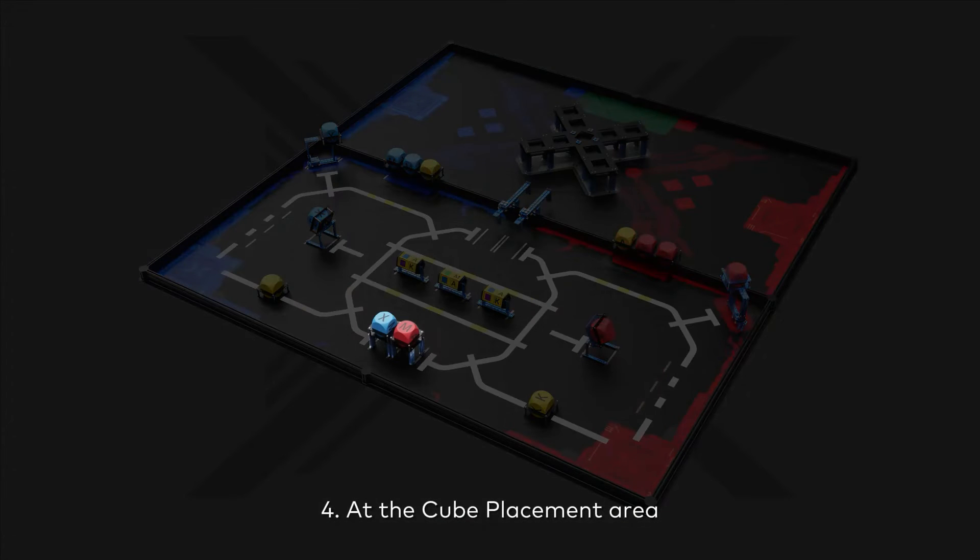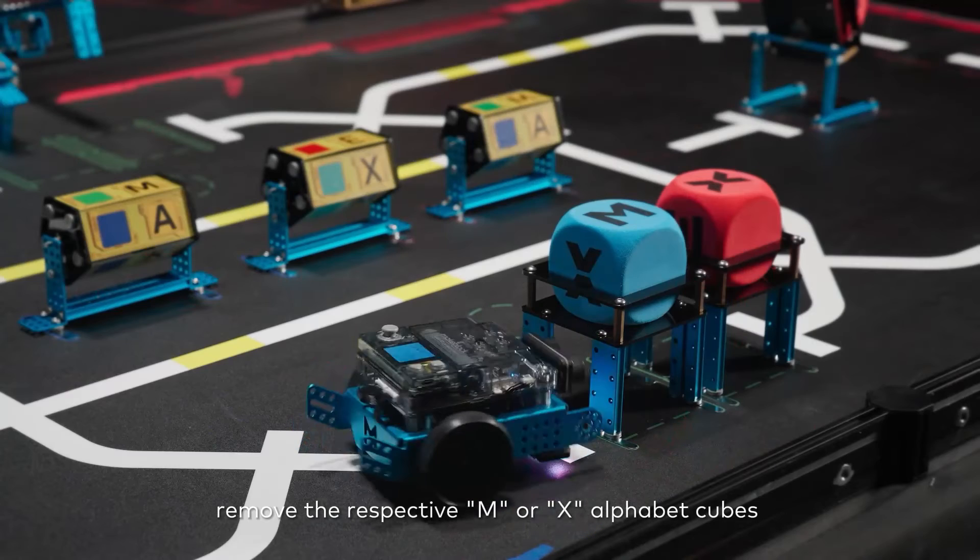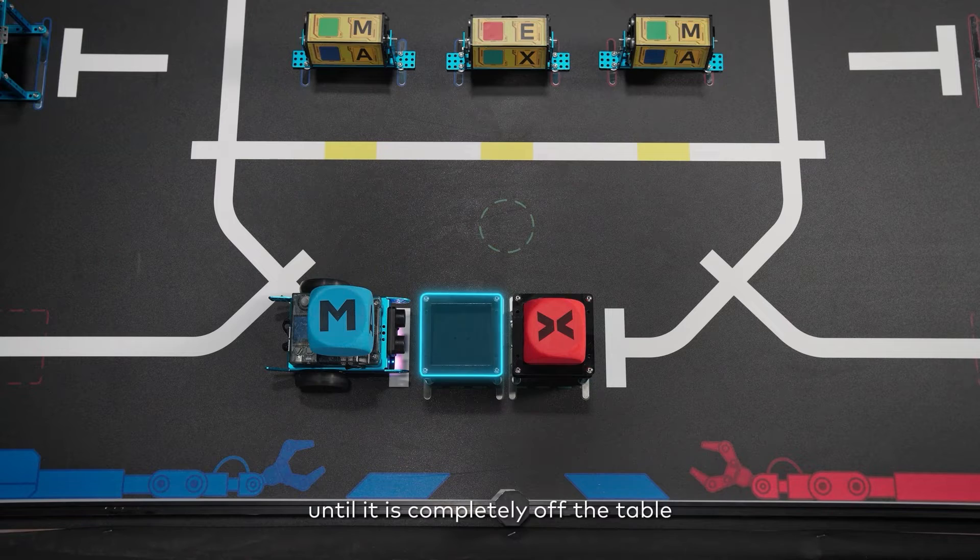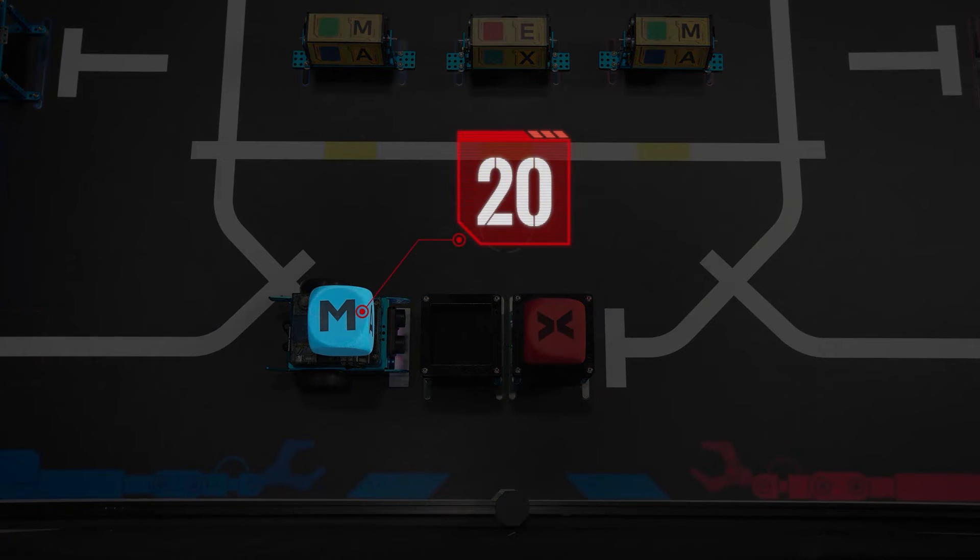At the cube placement area, remove the respective M or X alphabet cubes from the manufacturing table until it is completely off the table, and a red or blue cube is worth 20 points.